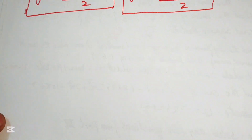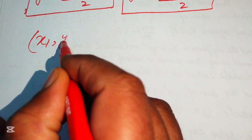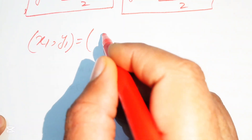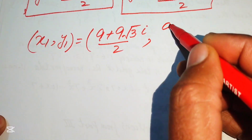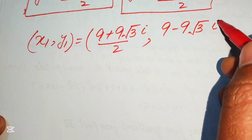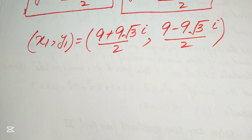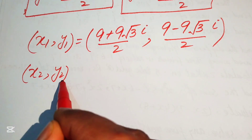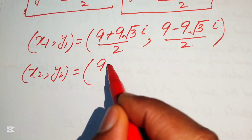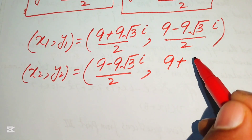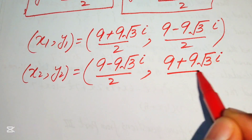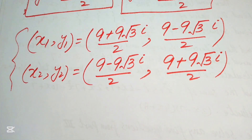Finally, the two solutions of the given system are: the first solution is x₁ equals 9 plus 9 root 3 iota divided by 2 and y₁ equals 9 minus 9 root 3 iota divided by 2. The second solution is x₂ equals 9 minus 9 root 3 iota divided by 2 and y₂ equals 9 plus 9 root 3 iota divided by 2. These are the final answers. Thank you for watching — please subscribe to my channel for more exciting videos.